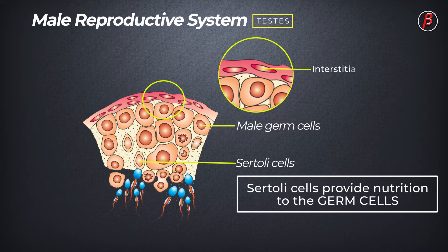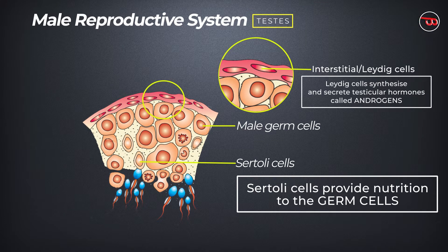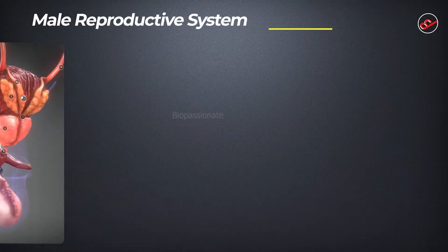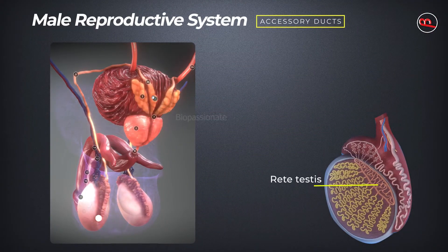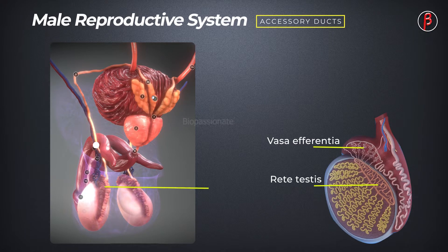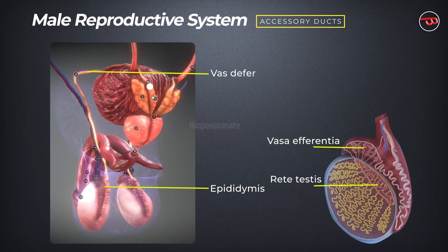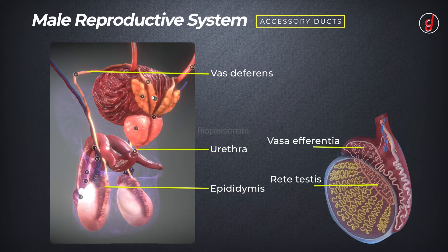The outer regions of the seminiferous tubules, called interstitial spaces, contain small blood vessels and interstitial cells also called Leydig cells. These Leydig cells synthesize and secrete testicular hormones called androgens. The male sex accessory ducts include rete testis, vasa efferentia, epididymis, and vas deferens including the urethra, which is a common passage for both sperm and urine.